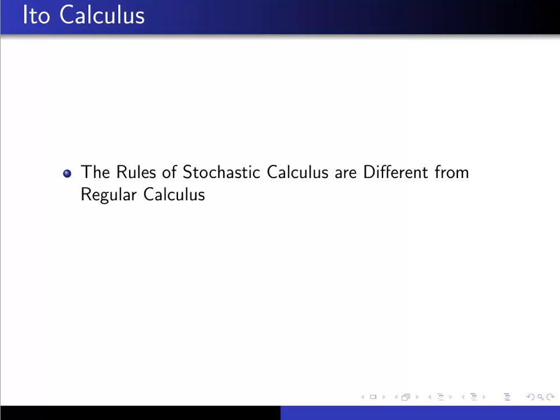In particular, Ito calculus. The key point there is that the rules of stochastic calculus are different from regular calculus. So for example, if you had F(x) = x², then you'd be used to dF = 2x dx, but that's wrong when it comes to stochastic calculus.